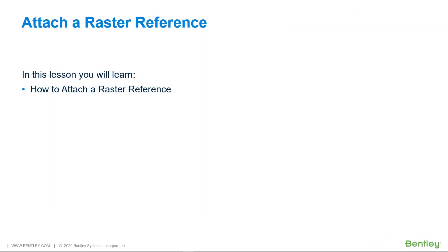Using Raster Manager, you can attach raster images of various formats, from monochrome to full color. You can modify the location, display order, and various other settings of previously attached raster image files. When a raster attachment is modified with Raster Manager, no changes are made to the original file, just to its attachment information in the DGN file.